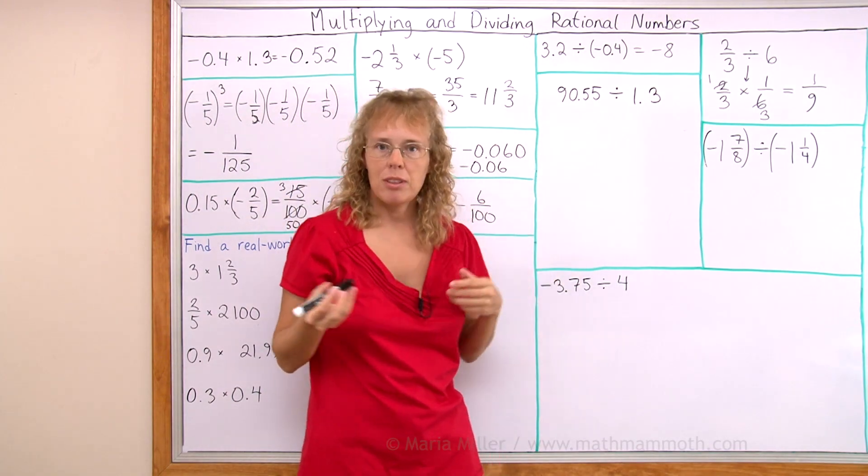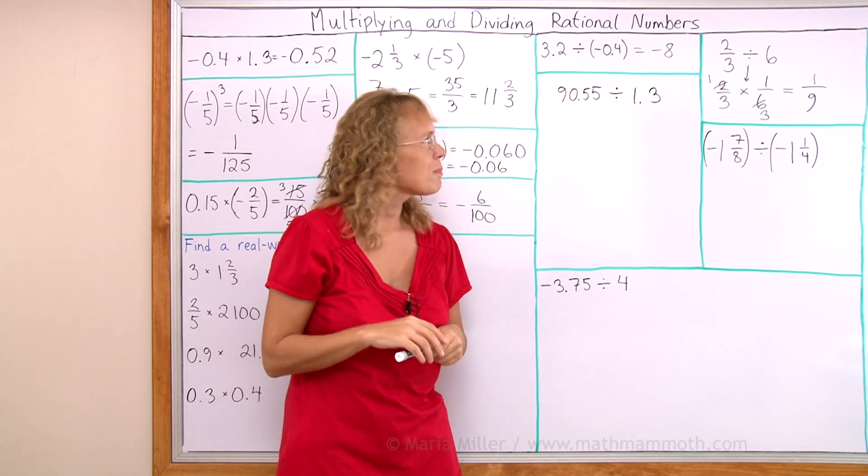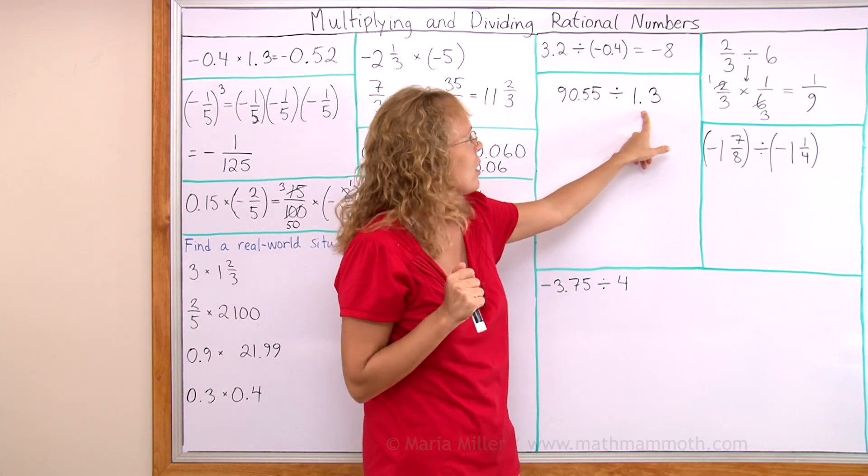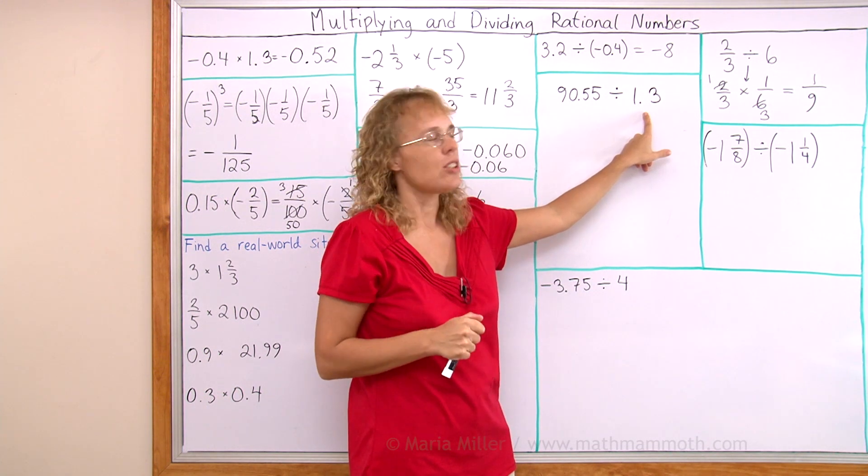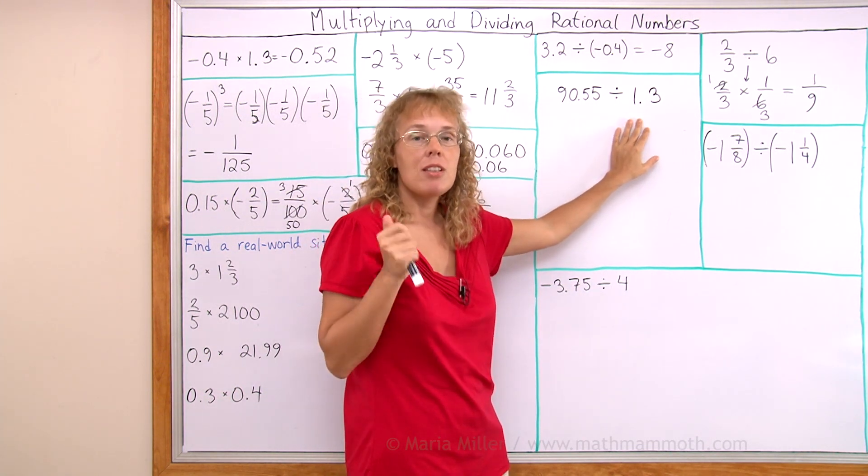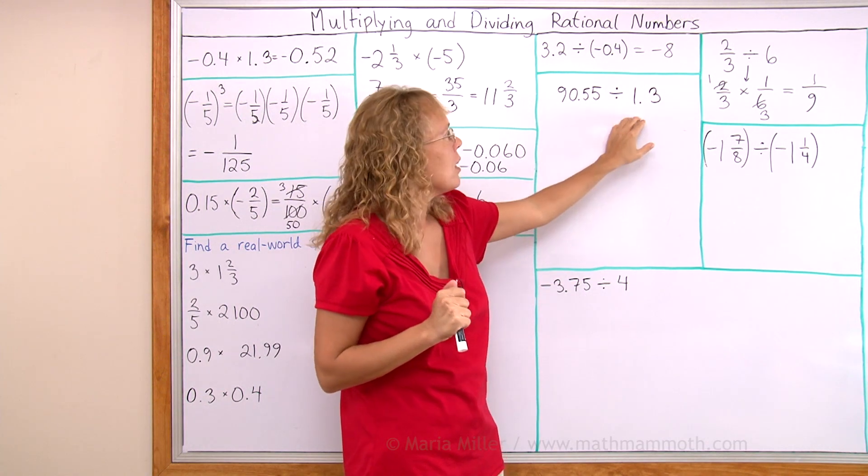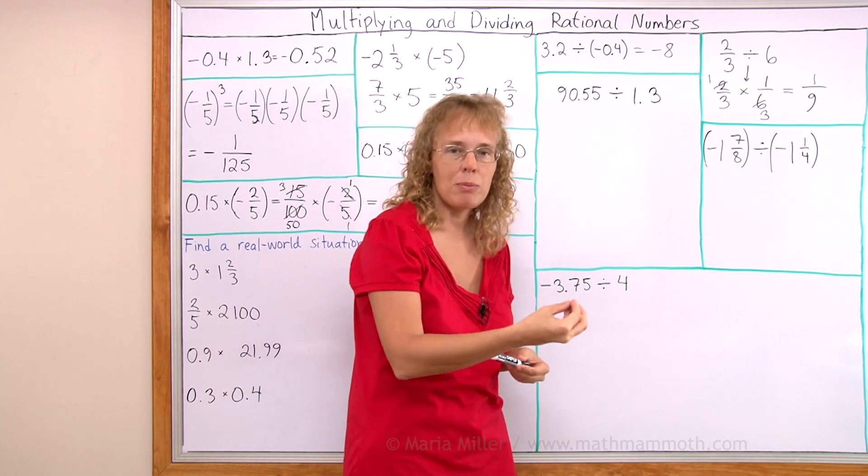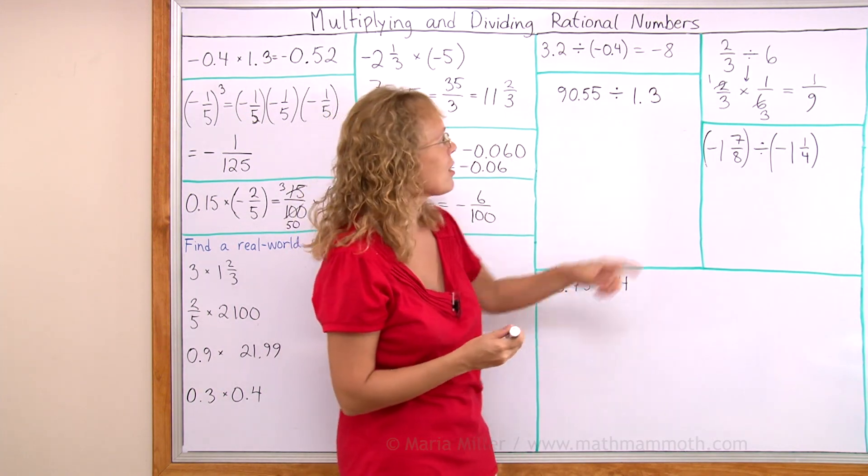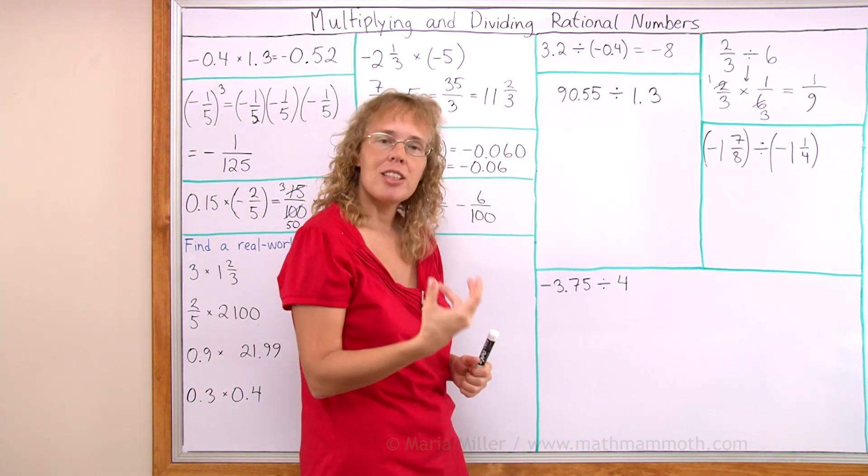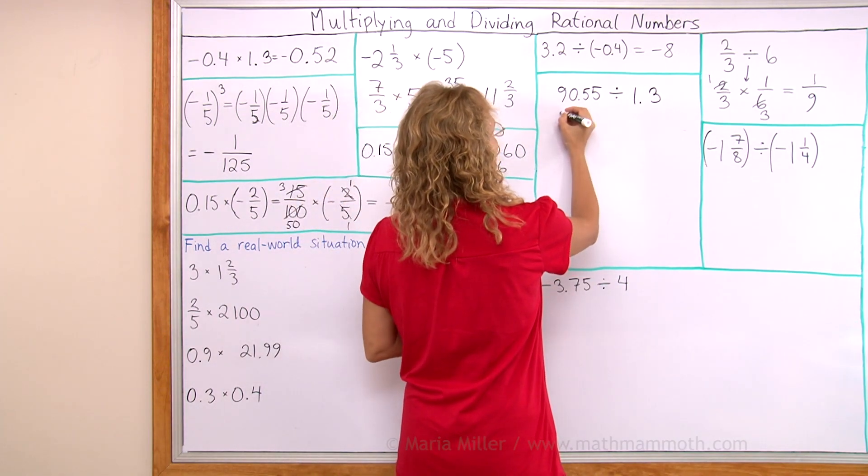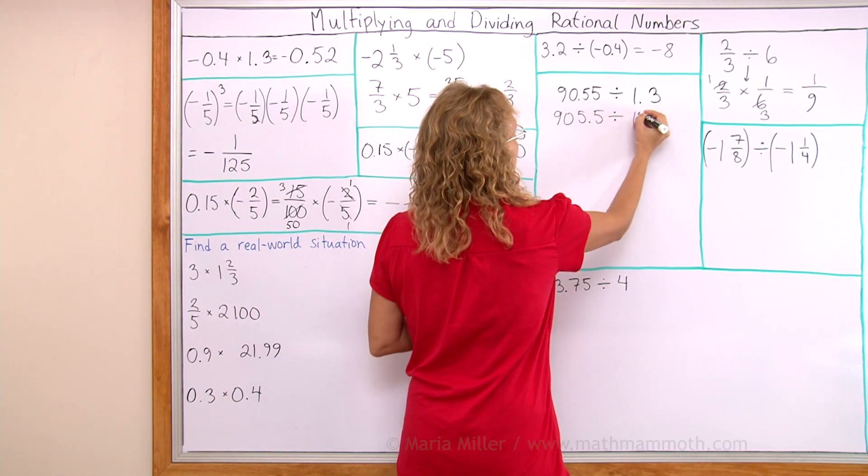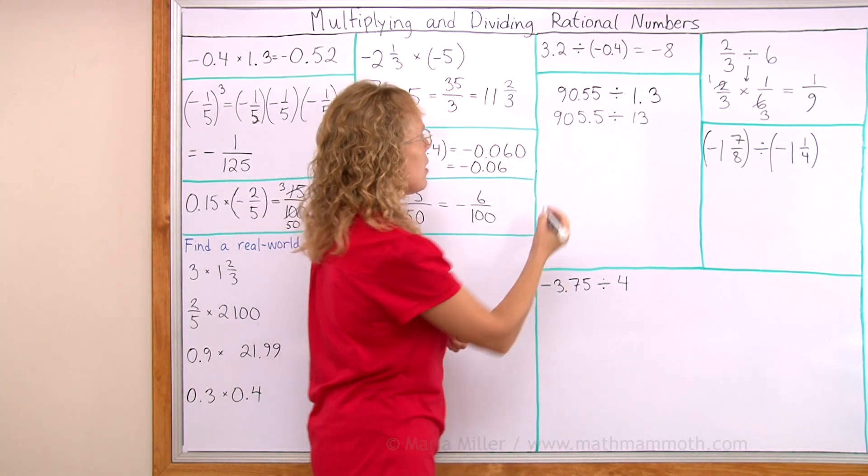This is a regular decimal division. Do you remember how to do those? If the divisor, this number here, is a decimal, you don't directly use long division. Instead we will change this into another problem where the divisor is a whole number. By multiplying both of these by 10, I will get a new division problem that will have the same answer as this one, but it will have 13 as a divisor. So I multiply both by 10 and I get 905.5 divided by 13.